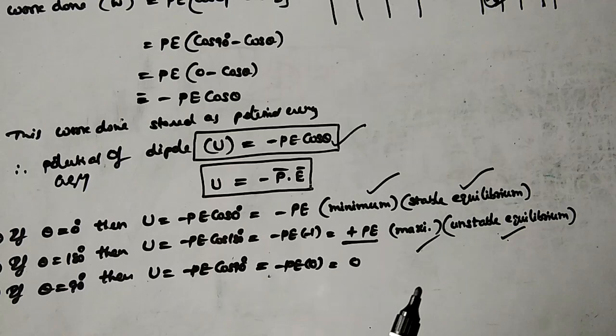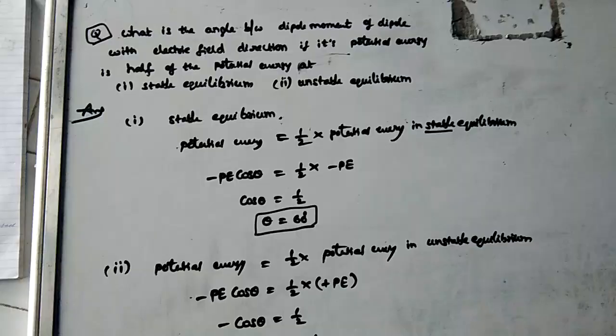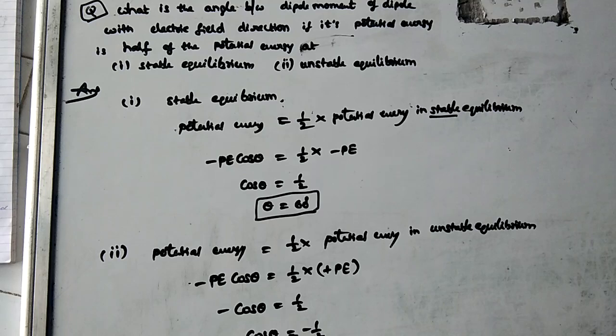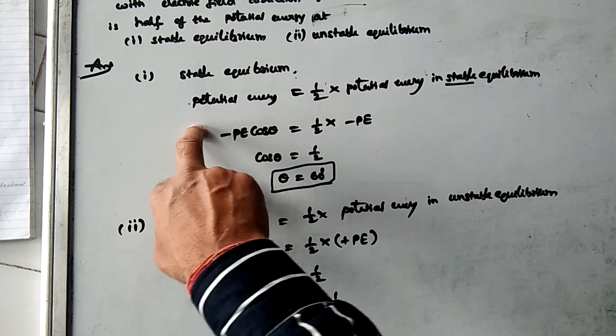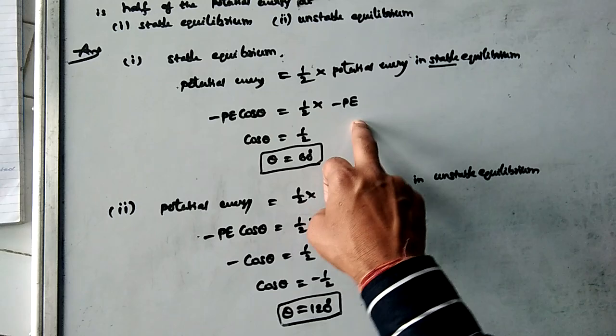Now I am going to explain one application. Look at this numerical question: what is the angle between the dipole moment and electric field if the potential energy of the dipole is half of the potential energy at stable equilibrium? Using the general formula U = −PE cosθ, stable equilibrium potential energy is −PE. Setting −PE cosθ = ½(−PE), the PE cancels, giving cosθ = ½, so theta = 60 degrees.